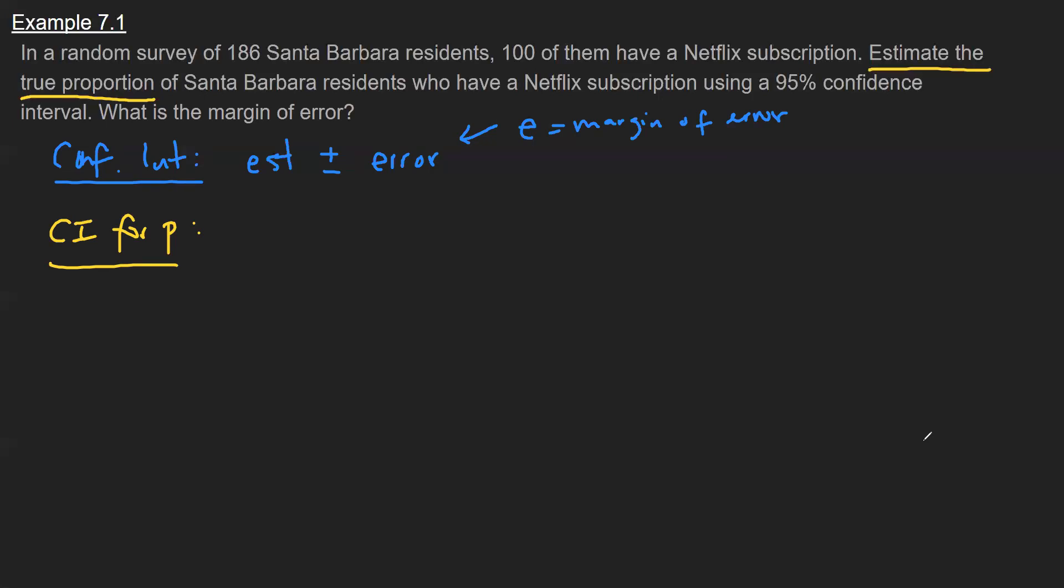So the estimate for P would be P-hat, which represents the sample proportion. The distribution that we're using to construct this form is the Z distribution. And then the standard deviation of P-hat you saw back in unit five is this form here. And by putting all of this together, this builds our confidence interval.